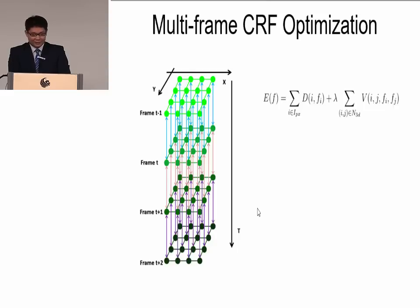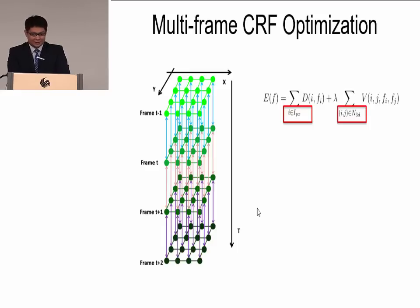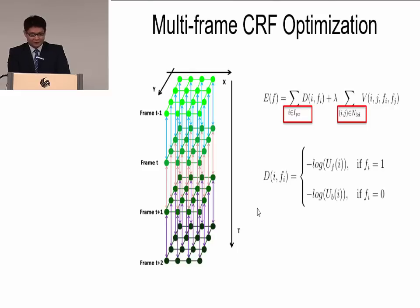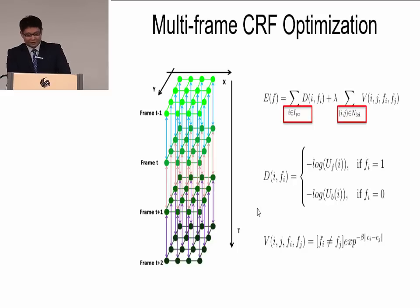We use the same energy function with a few differences: now we use individual pixels instead of superpixels, and for the pairwise term we consider 3D constraints instead of 2D. The unary term D is obtained from the foreground probability U_F and background probability U_B. The pairwise term V is obtained using the difference between two pixels.